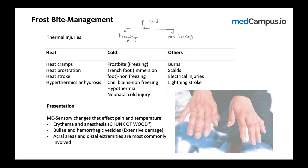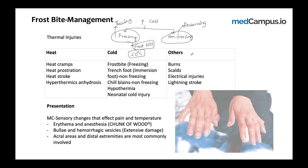The only peripheral cold injury related to freezing is frostbite. In frostbite, the temperature reaches less than 0°C — ice cold — which causes the tissue to freeze. Whenever there is frozen tissue, we do thawing, not re-warming. Re-warming is the treatment for non-freezing injuries such as chilblains, trench foot, neonatal cold injury, and hypothermia.